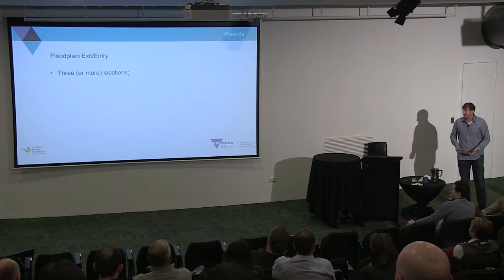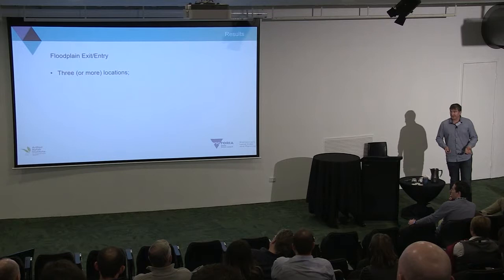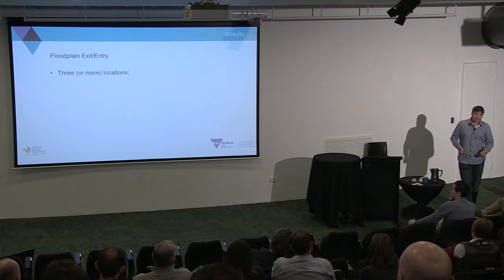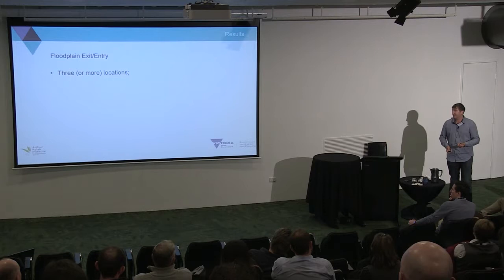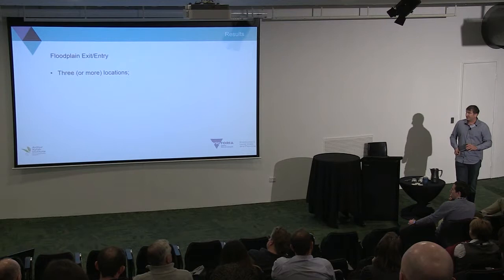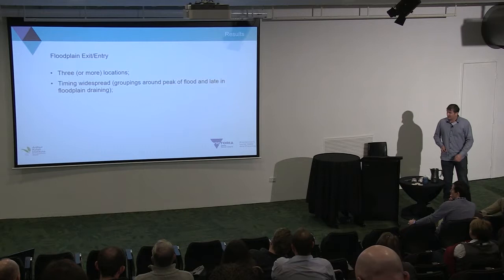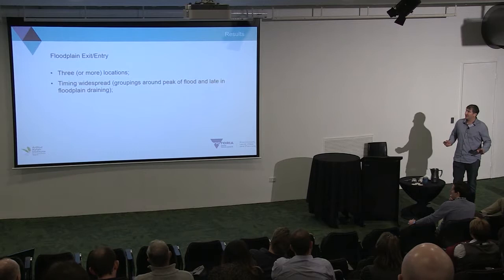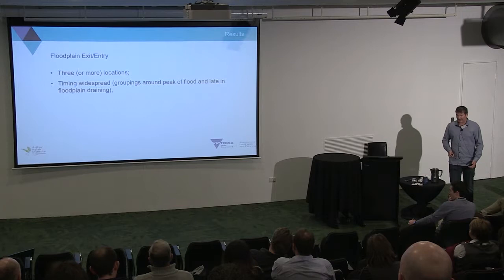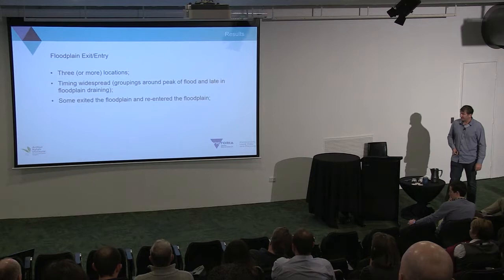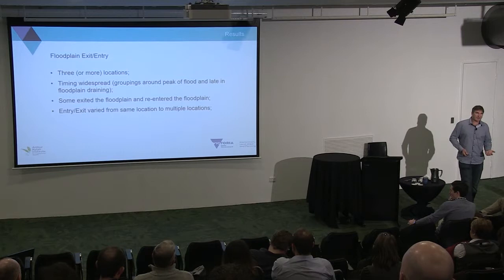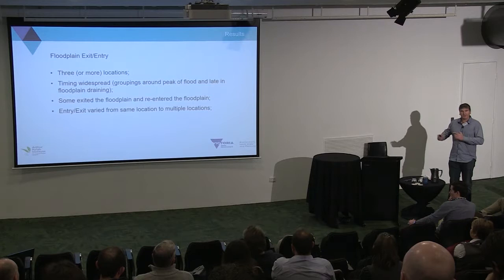Regarding entry movements, we identified three or possibly more pathways. Chinaman's Bend — the natural outfall — as expected. Schillinglaw's Regulator, as expected. And there was another one we're pretty sure is Spur Creek, though we need further investigation — it only fills when flows reach 27,000 megalitres per day. There may be more on the upstream side, but we should find out with another flood and a receiver at Spur Creek. Fish exited and re-entered throughout the whole period, with groupings around the peak of the flood in mid-October and late in the floodplain draining. Some used the same location for entry and exit; others used multiple locations — some used Chinaman's Bend and Schillinglaw's, some used Schillinglaw's and the unknown location.